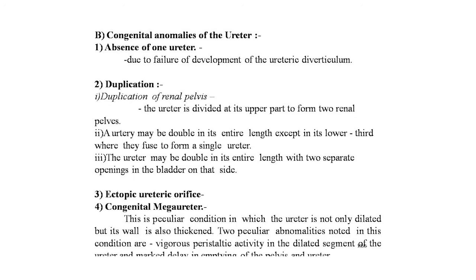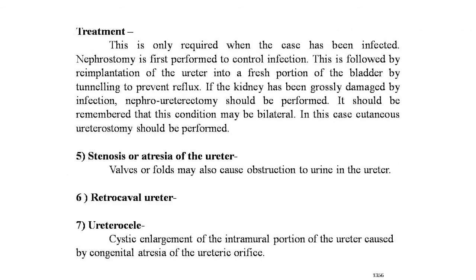The fourth is congenital mega ureter, a peculiar condition in which the ureter is not only dilated but its wall is also thickened. The lower end and orifice appear normal and reflux is negligible. Two peculiar abnormalities noted are vigorous peristaltic activity in the dilated segments and marked delay in emptying of the renal pelvis. Treatment is only required when the case has been infected — nephrostomy is first performed to control infection, followed by re-implantation of the ureter into a fresh portion of the bladder by tunneling to prevent reflux.